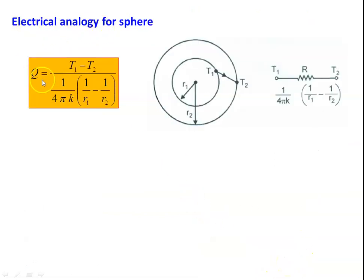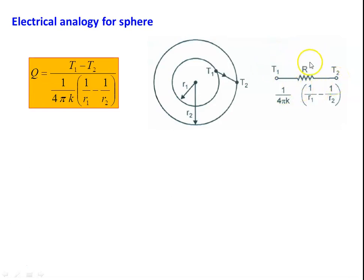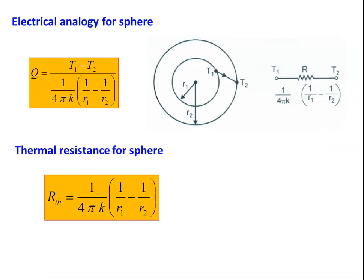The heat transfer Q for the hollow sphere is: Q = (T₁ − T₂) / [(1/4πk)(1/r₁ − 1/r₂)]. The corresponding thermal circuit has T₁ as the inner surface temperature, T₂ as the outer surface temperature, and thermal resistance R = (1/4πk)(1/r₁ − 1/r₂). This thermal resistance for the sphere equals (1/4πk)(1/r₁ − 1/r₂).